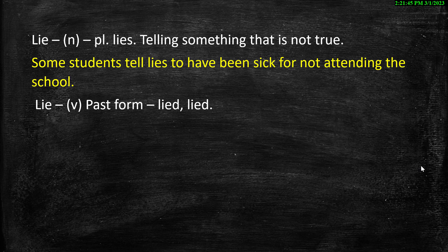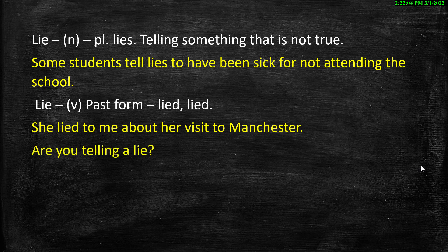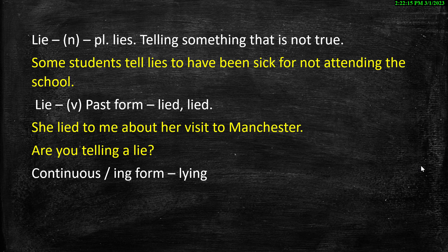Lie is also used as a verb. As a verb, the first form is lie, the present form. The second and third forms in the past are lied and lied. Example: she lied to me about her visit to Manchester. Are you telling a lie? The continuous form or the -ing form is lying. She is not lying, just kidding.